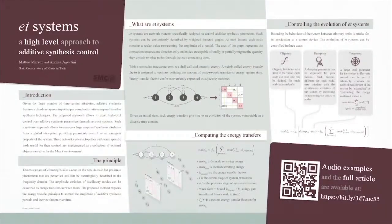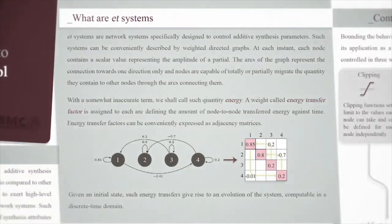The major downside of additive synthesis techniques is the amount of time-varying parameters required for their control. Our work proposes a method to exert high-level control over additive synthesis attributes and their evolution over time. This approach allows mastering a large amount of synthesis parameters through the definition of the behavior of a system, of which the parametric control is an emergent property. EET systems are network systems specifically designed to control the amplitude of additive synthesis partials. Such systems can be described as weighted directed graphs, in which nodes are capable of migrating the quantity they contain — referred to as energy — to other nodes through the arcs connecting them.